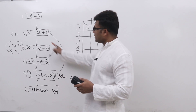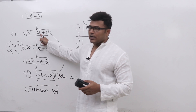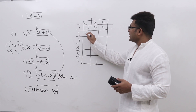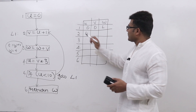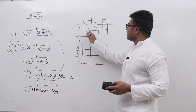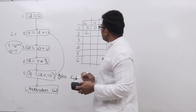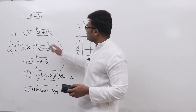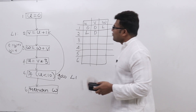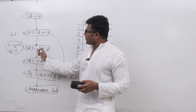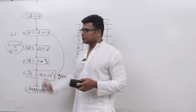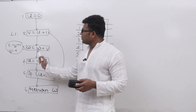Coming to statement number two: is U alive? Yes, because U is used, so U is live at statement number two. V is defined, so V is definitely dead. For W, there is a path from statement number two to statement number three where W is used before its definition, therefore W is live.